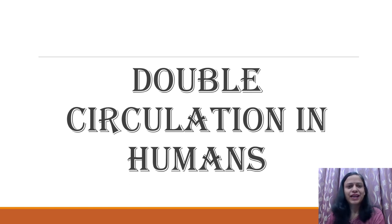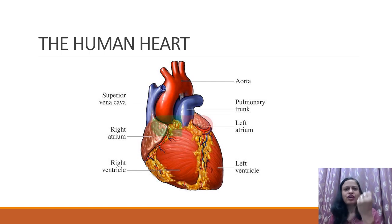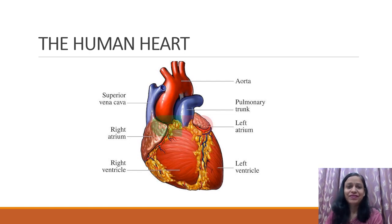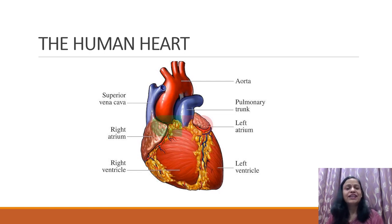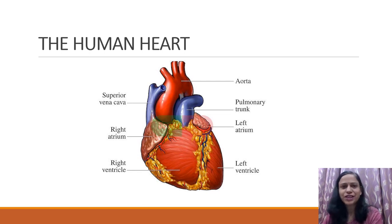Let's have a look at the diagram here. This is somewhat a realistic picture of the human heart. Your heart is just the size of your closed fist and it's located on the left side of your chest. It is enclosed by a rib cage which provides protection to it, and it is the most vital organ of your body. It's really difficult to understand what is inside the heart from this figure, so I have brought a diagram drawn by me which I will be showing to you.